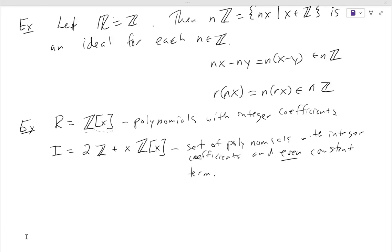So we were working on this example last time. Our big ring is polynomials with integer coefficients, and our ideal is this strange-looking notation. That set of polynomials — this just means multiply all the polynomials by x, which gets rid of the constant term. So this is just any polynomial that has zero constant term.